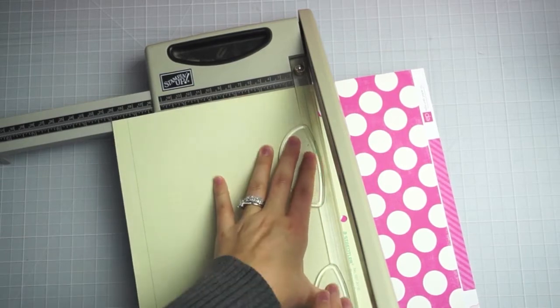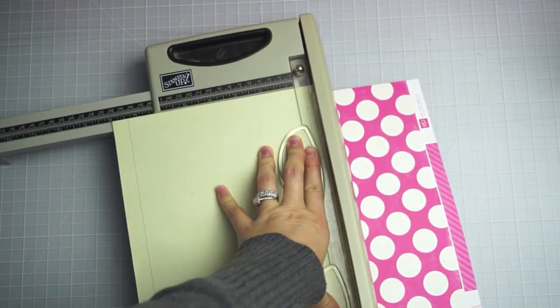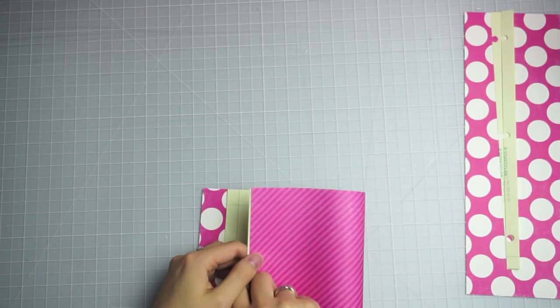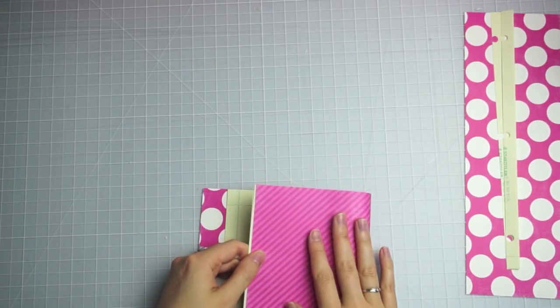Alright and then I press that part down and then slice. So then I'm just going to fold this. I'm just going to fold it all together because I'm going to slice off both edges of this.